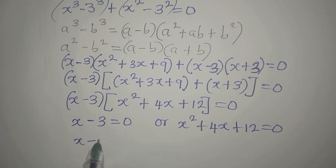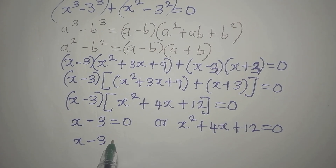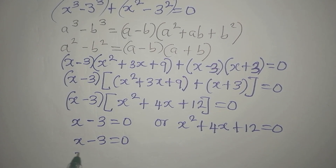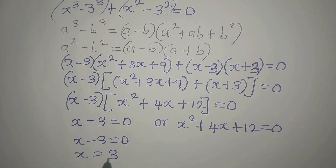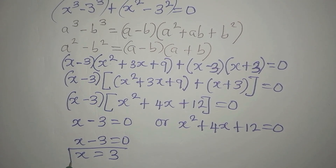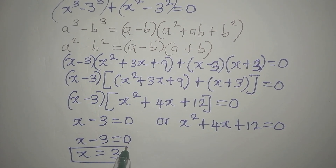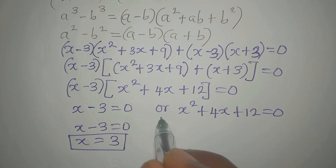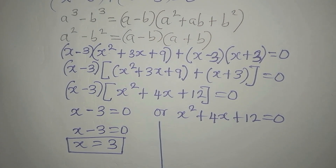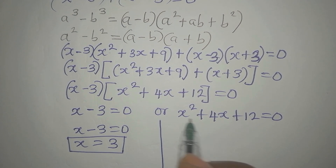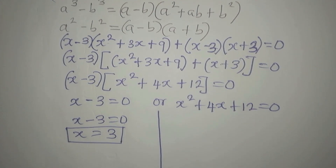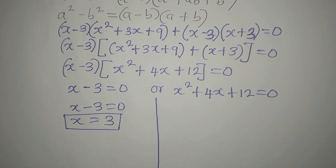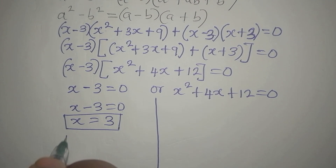From x minus 3 equals 0, we get x equals 3. So here we have one solution to the equation. But there will be a need for us to get more solutions from the quadratic factor.